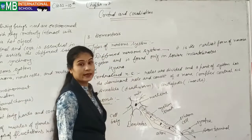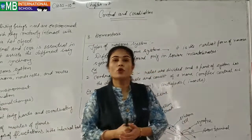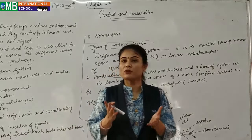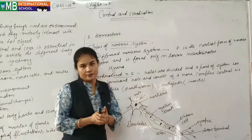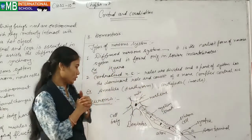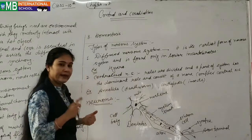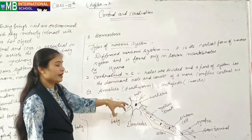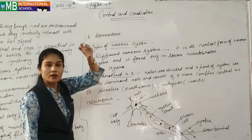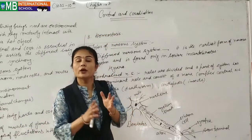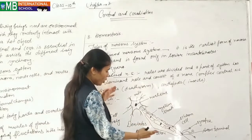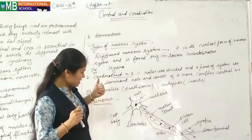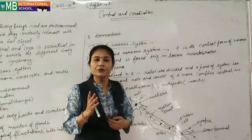Now I am telling you about neurons and why they are important for our body. Without neurons or nerve cells, we cannot feel any type of senses or feelings in our body. The importance of neurons is co-related with control — control of the brain and control of the spinal cord over our body parts. I have already drawn a structure here — this is the structure of a typical neuron, which is an important unit of the nervous system.